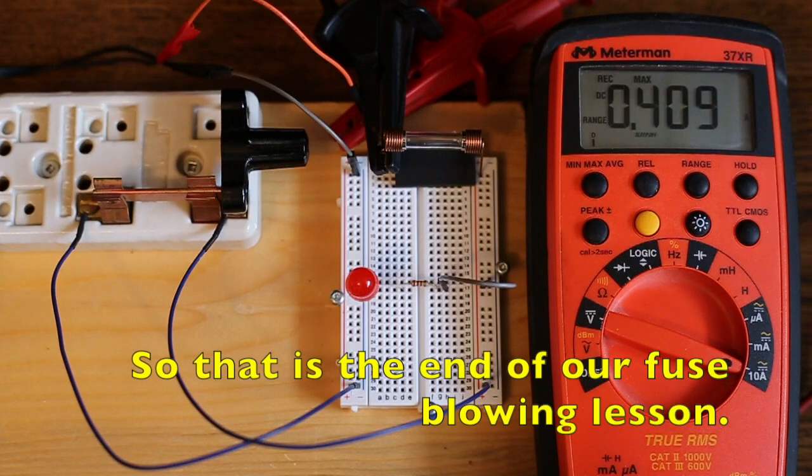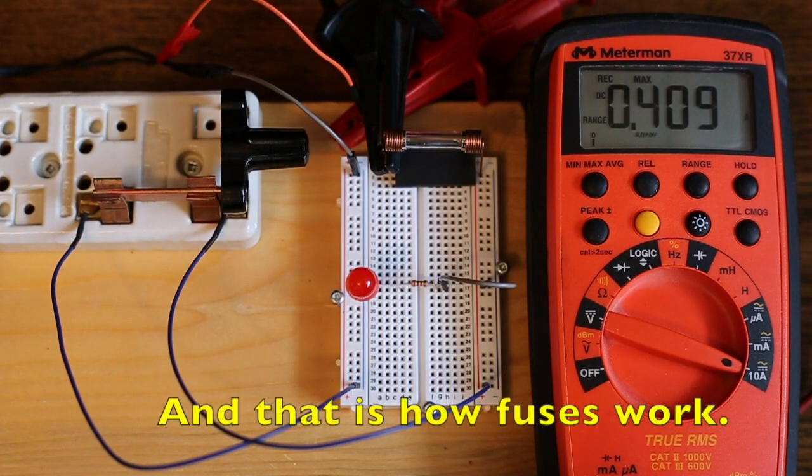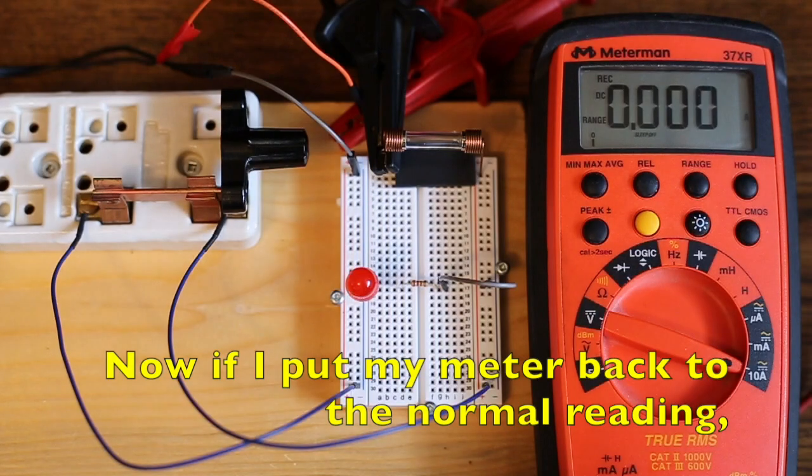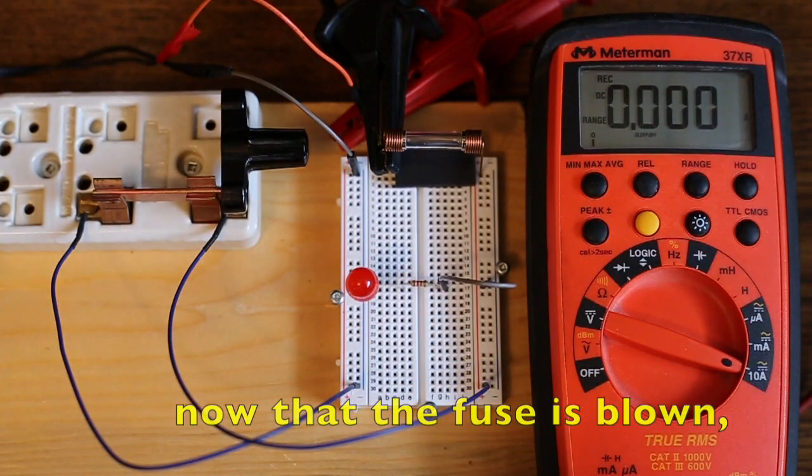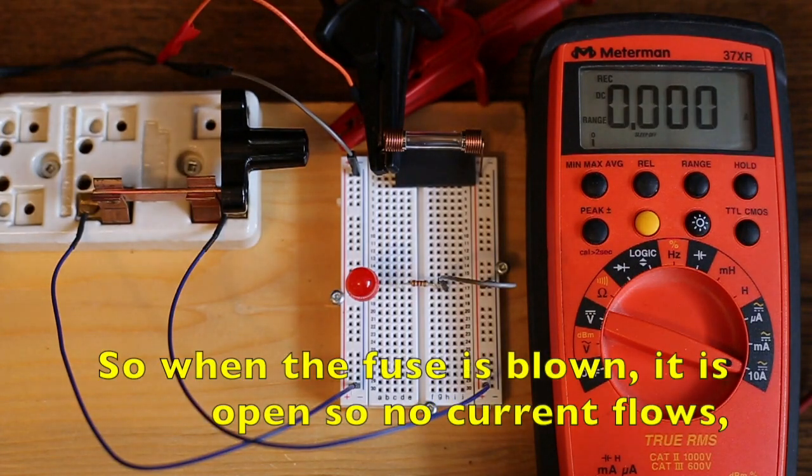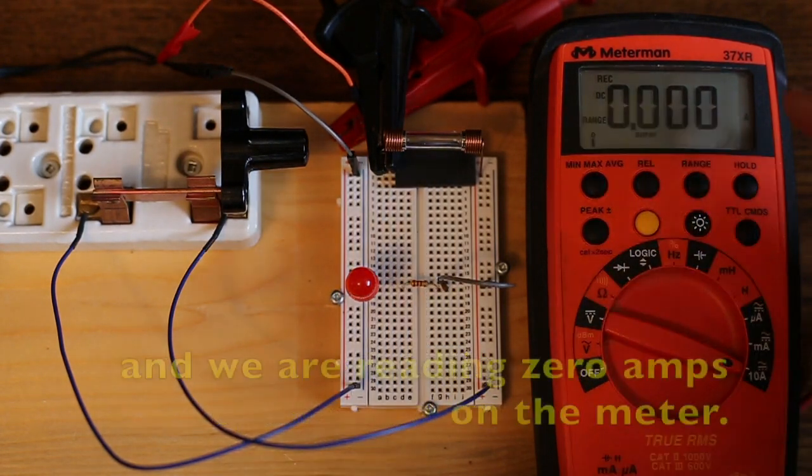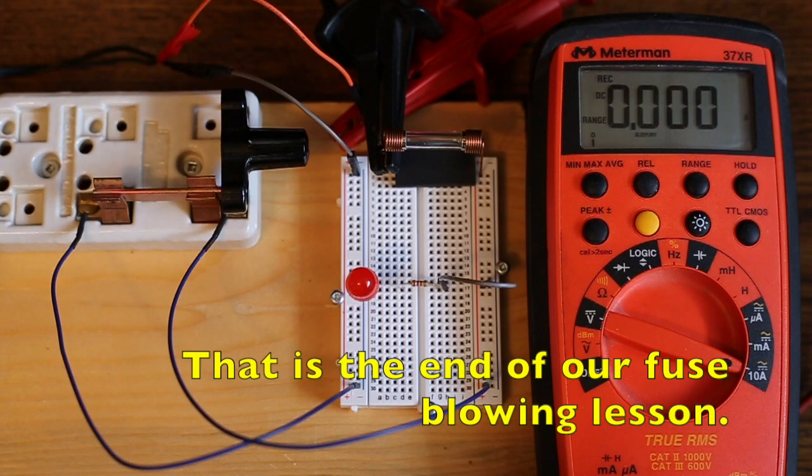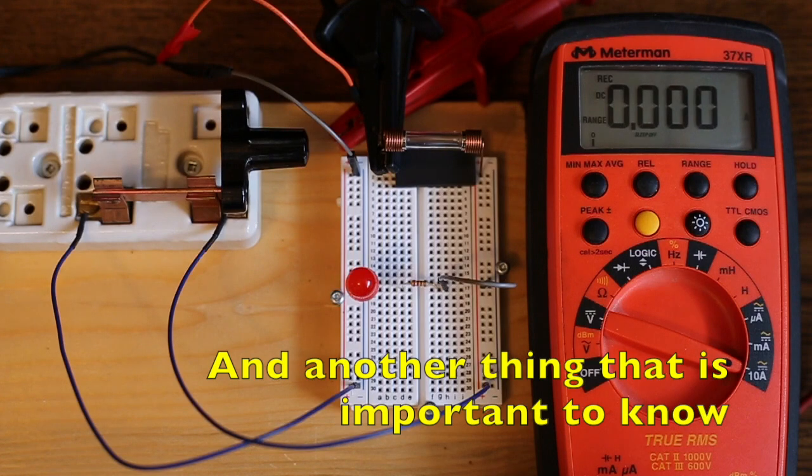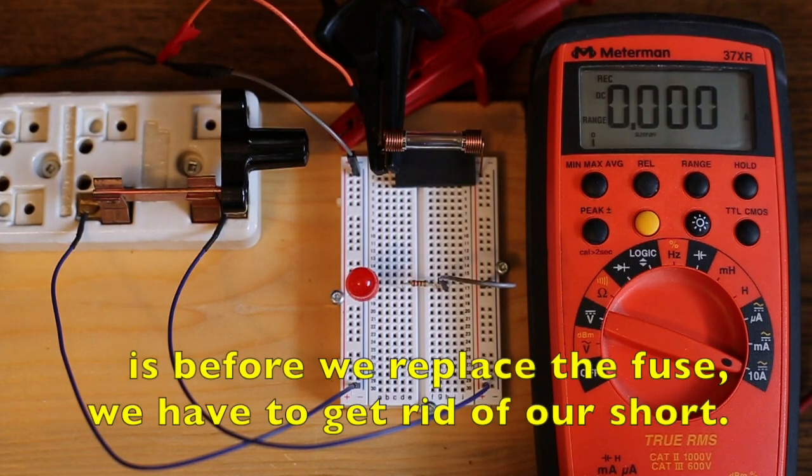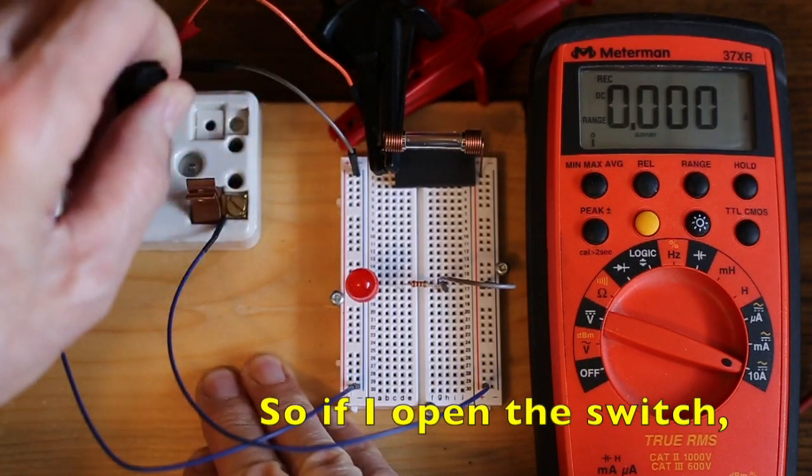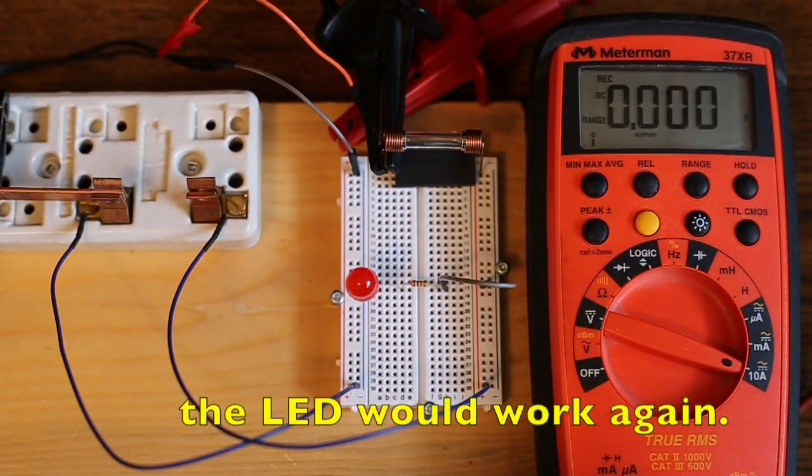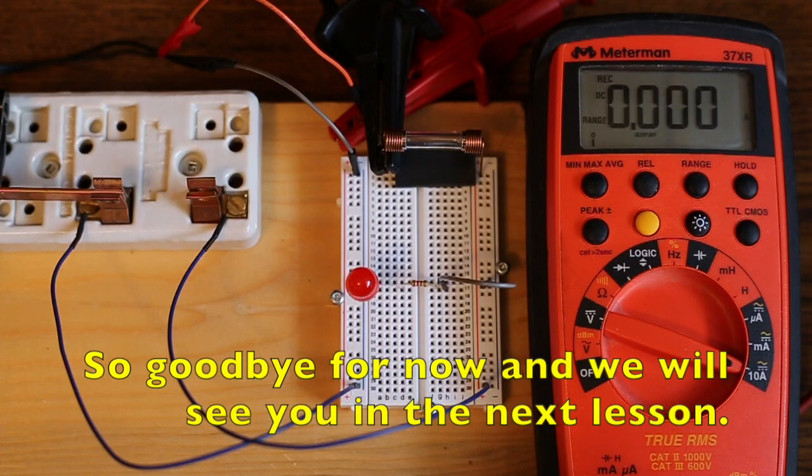So that's the end of our fuse blowing lesson. And that's how fuses work. Now if I put my meter back to the normal reading, now that the fuse is blown, you see that the LED is out. So when the fuse is blown, it's open, so no current flows. And we're reading 0 amps on the meter. That's the end of our fuse blowing lesson. And another thing that's important to know is, before we replace the fuse, we have to get rid of our short. So if I open the switch, and then if I replace this fuse, the LED would work again. So goodbye for now, and we'll see you in the next lesson.